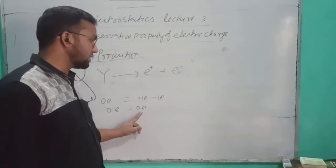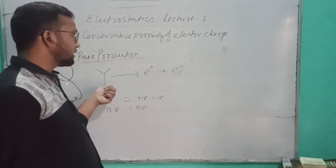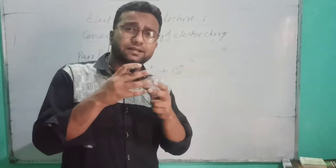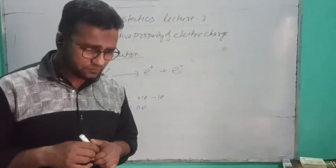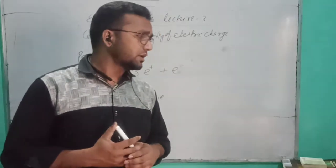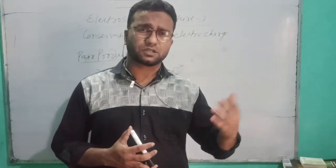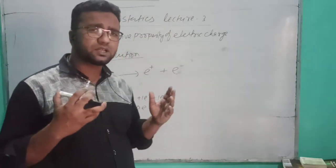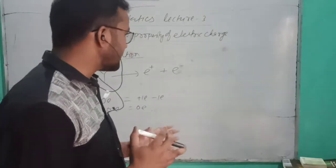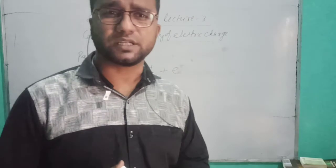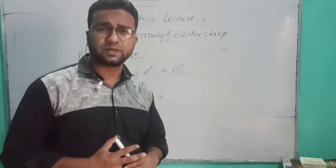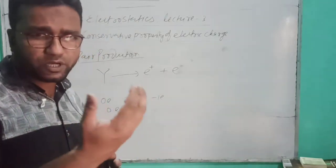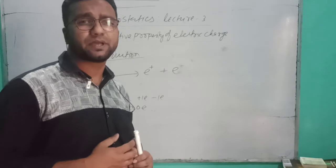Before production, zero. After production, also zero. So we call it pair production and when we reverse it, we call it pair annihilation. Pair production must interact with a particle or matter. Sometimes students ask that pair production is possible in space or vacuum. So we know that in a vacuum there is no matter, no particle. That's why pair production is not possible there. Under energy conservation, that's why pair production is not possible in vacuum.